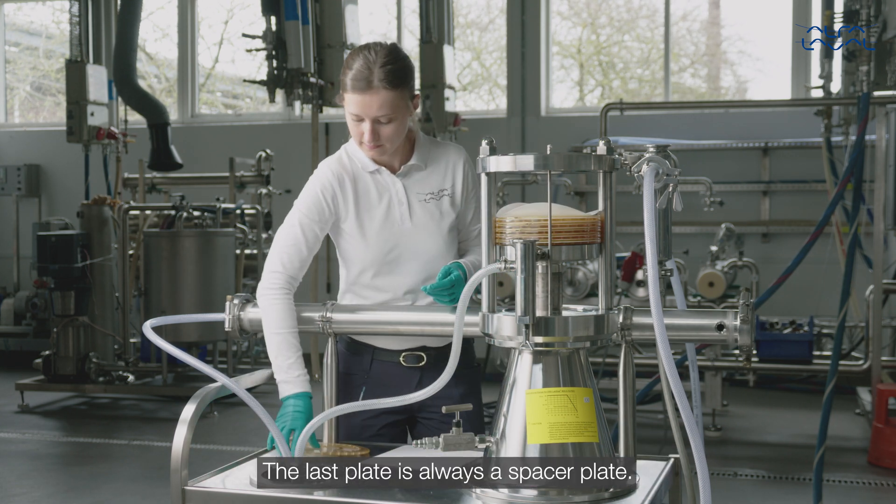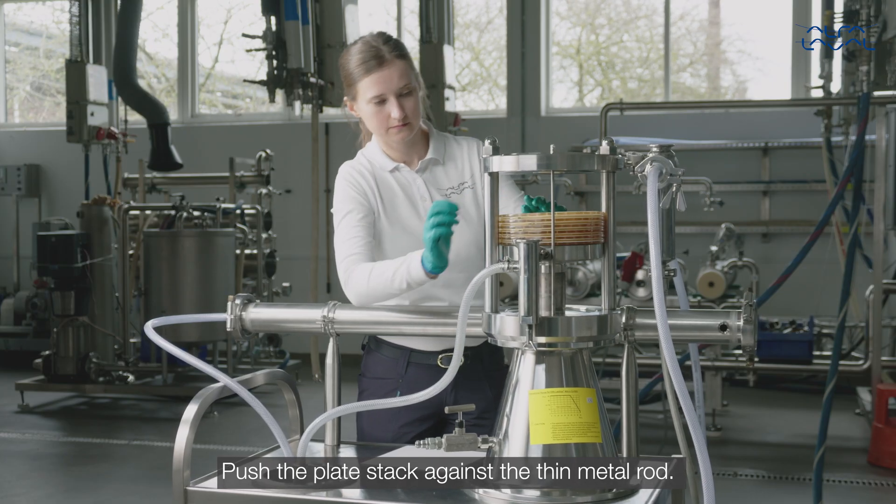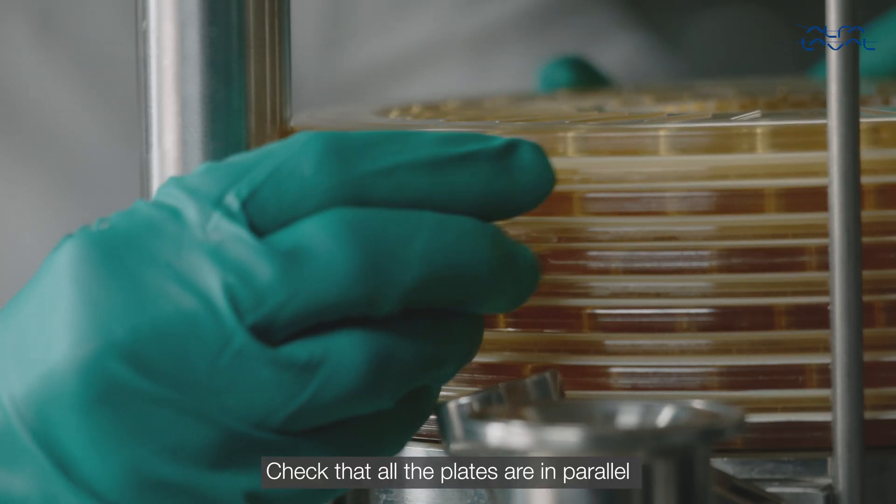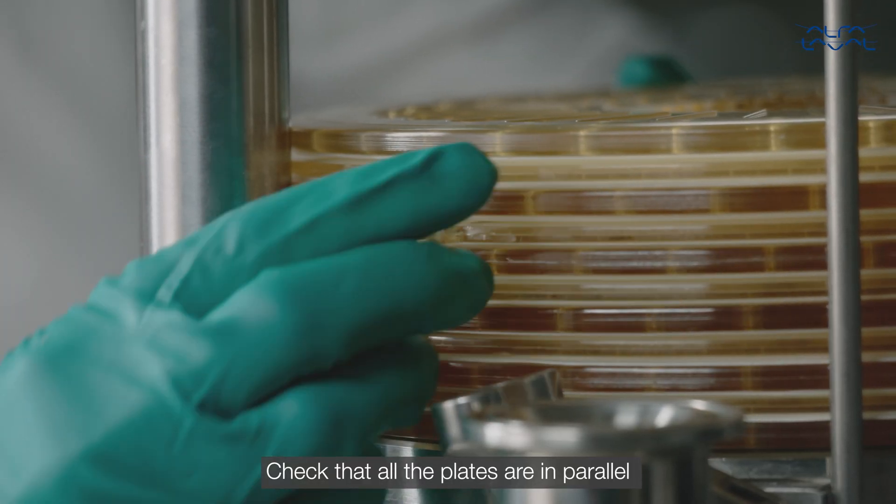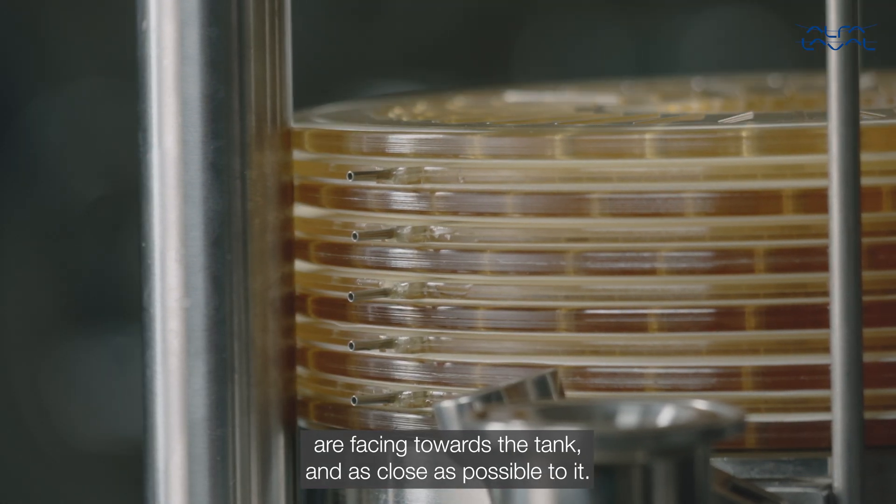The last plate is always a spacer plate. Push the plate stack against the thin metal rod. Check that all the plates are in parallel and arrange them so that the permeate hose connections are facing towards the tank and as close as possible to it.